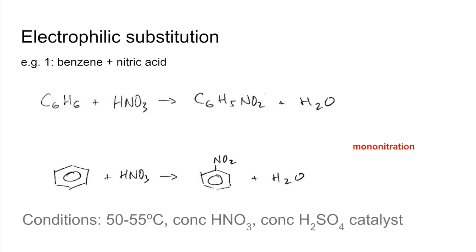The conditions for the reaction: 50 to 55 degrees C temperature. That's really important because if you go above that you run the risk of polynitration taking place, where more than one hydrogen is replaced with a nitro group - and they can be explosive. The nitric acid needs to be concentrated and you also need a concentrated sulfuric acid catalyst.